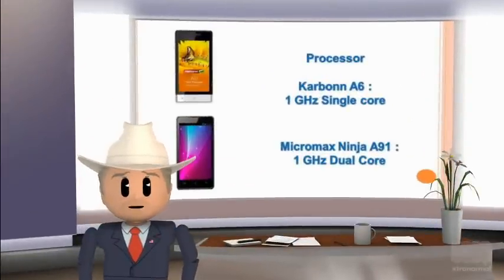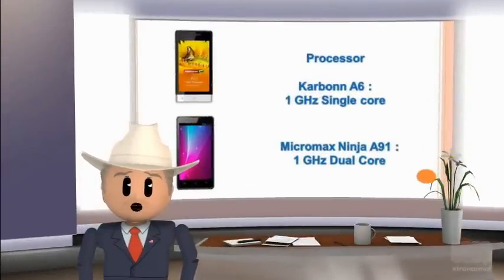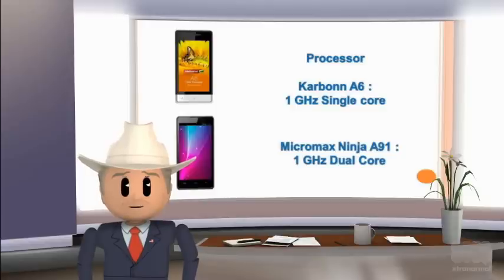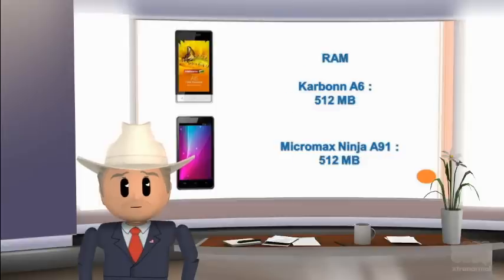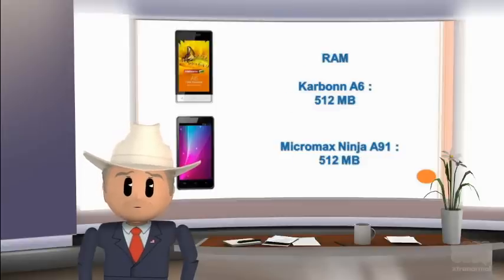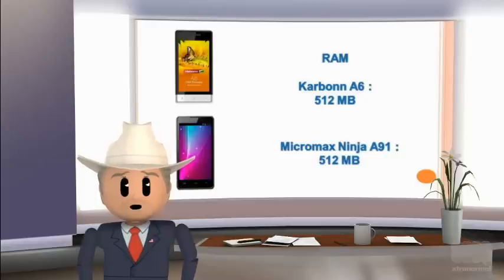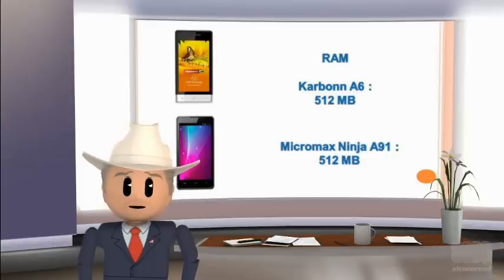Processor of Karbonn A6 is 1 GHz single core, and processor of Micromax Ninja A91 is 1 GHz dual core. RAM of Karbonn A6 is 0.512 GB, and RAM of Micromax Ninja A91 is 0.5 GB.